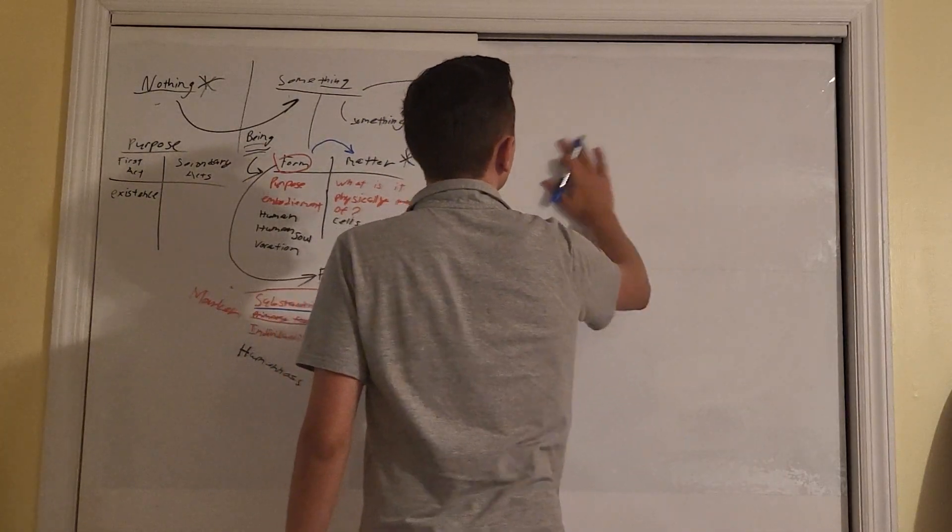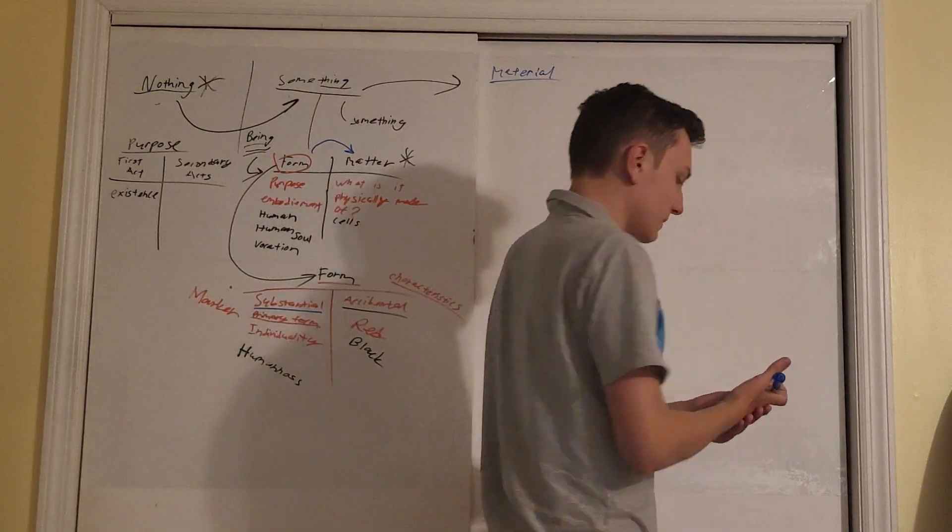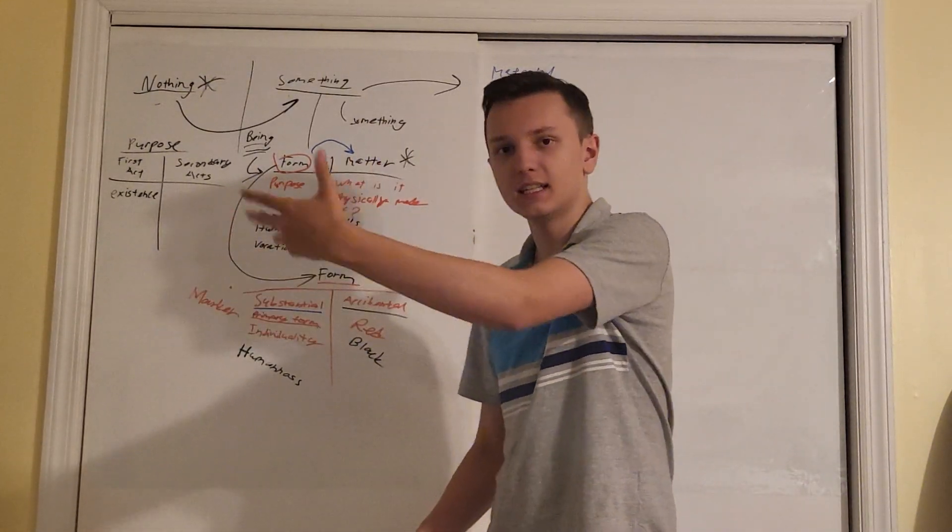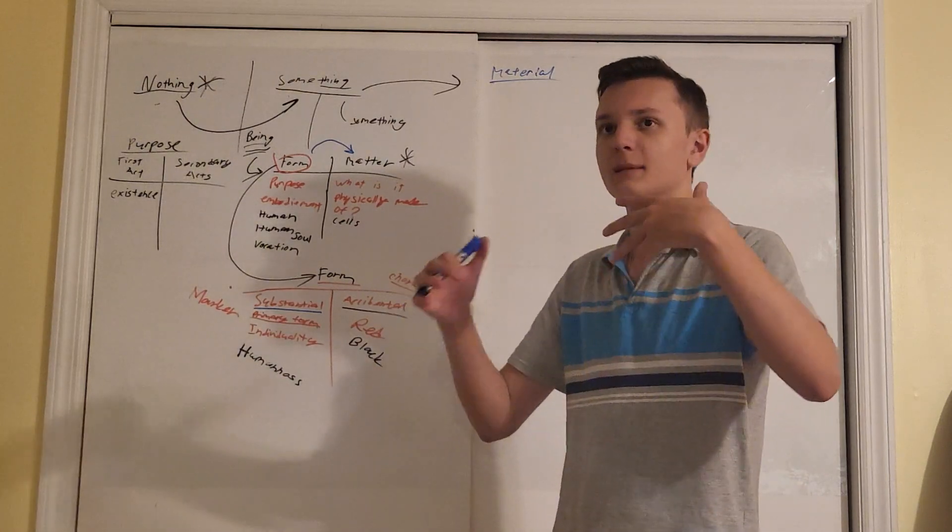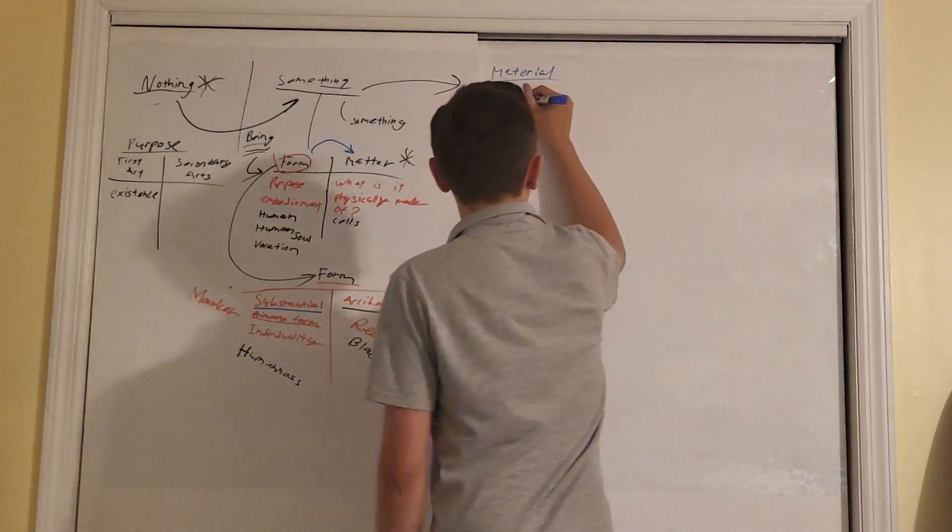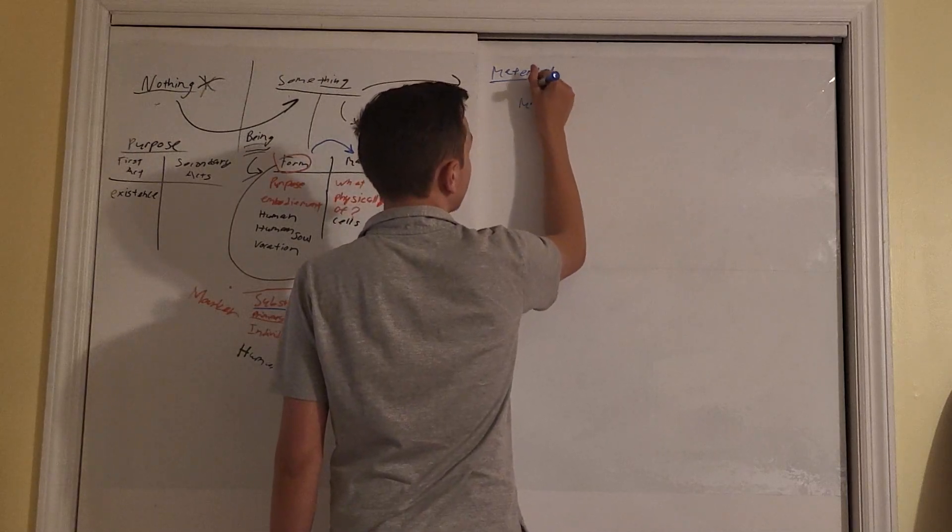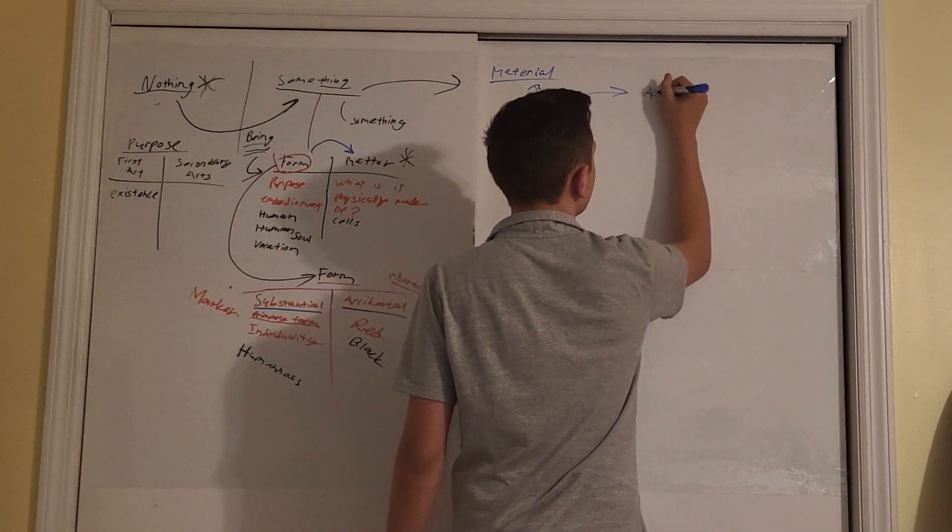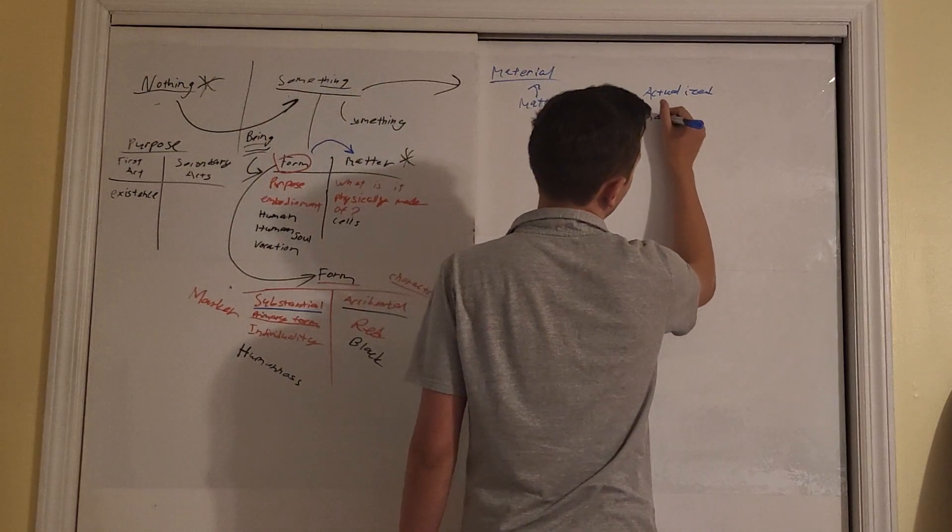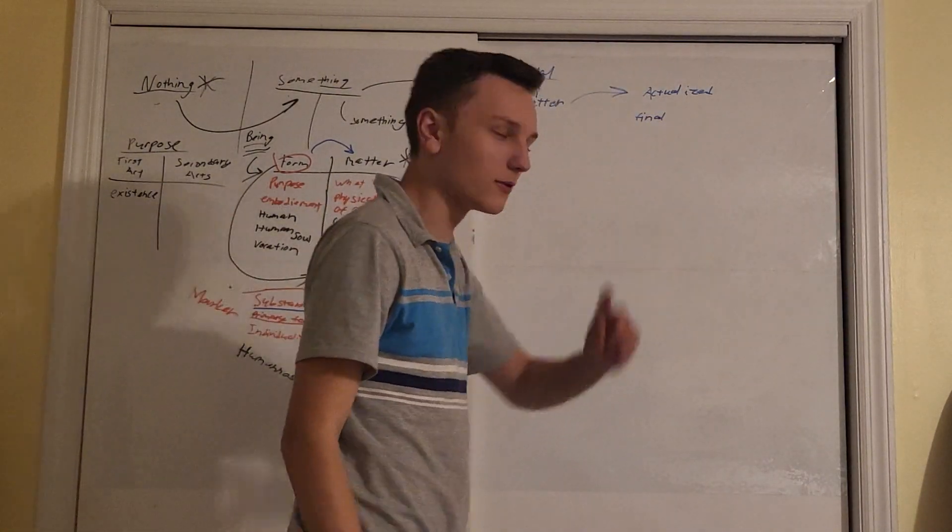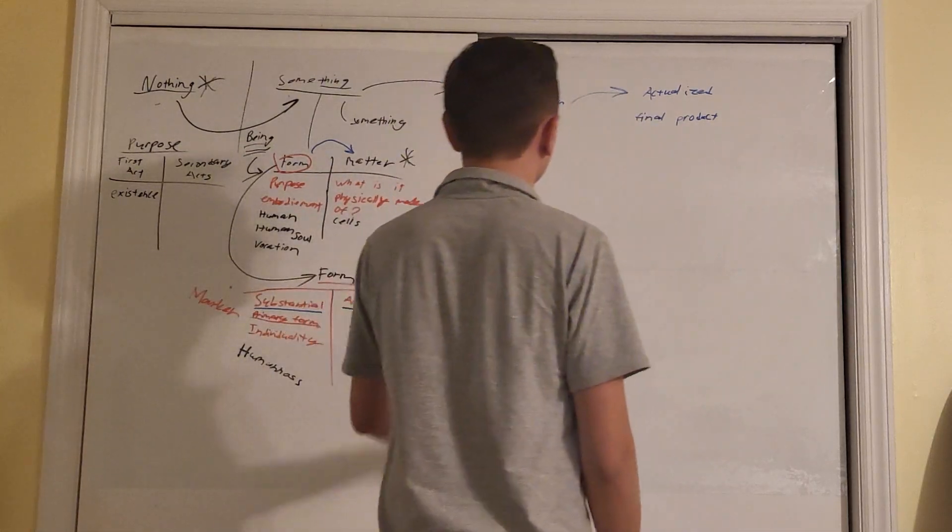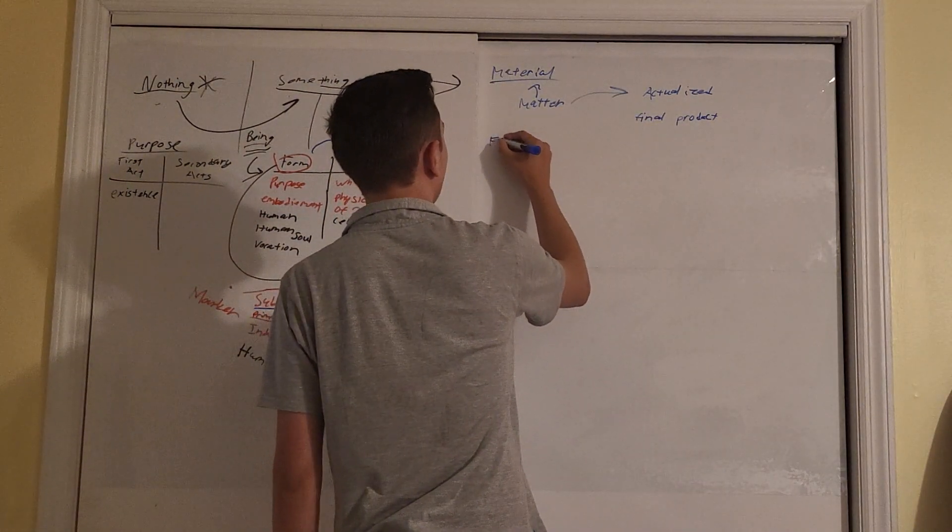First and foremost, we've got the material cause. So the material cause references something's matter. You cannot cause a TV to exist if you do not have the matter necessary to actualize a TV. Matter, material - get it? Matter has to be actualized into the final form. This is what I talked about first with our little vocabulary spiel. The final product. Not the final form, because form means something else.